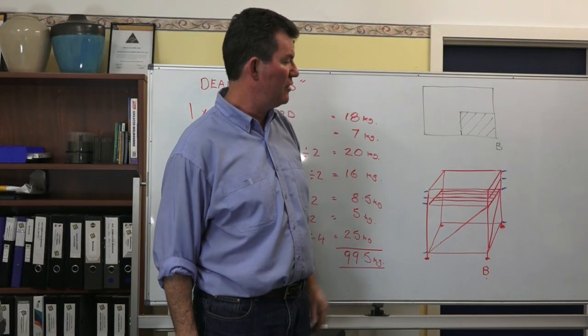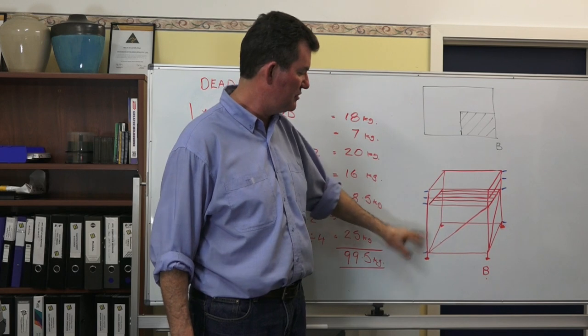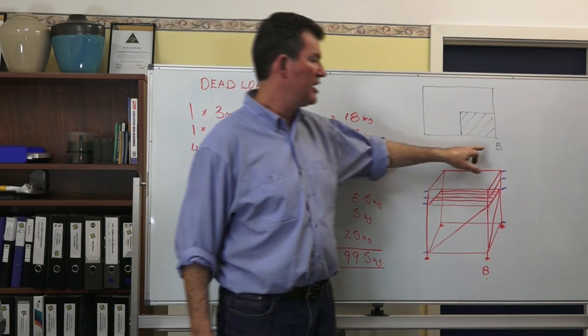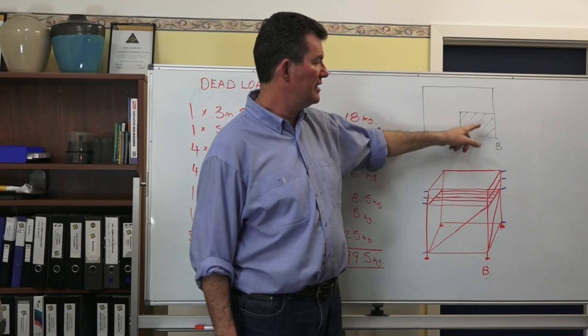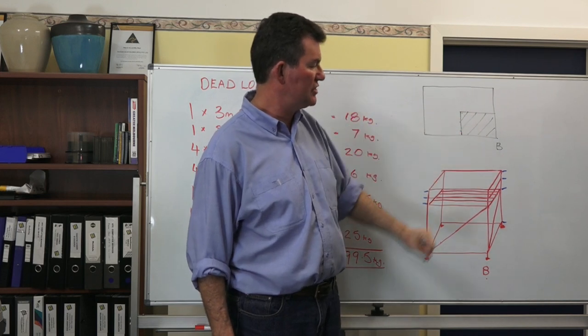If we take a single bay of scaffold, it's just a small scaffold, it's only 2 meters high. And we are going to calculate the dead load on standard B. And that is the weight of the components in that shaded area.